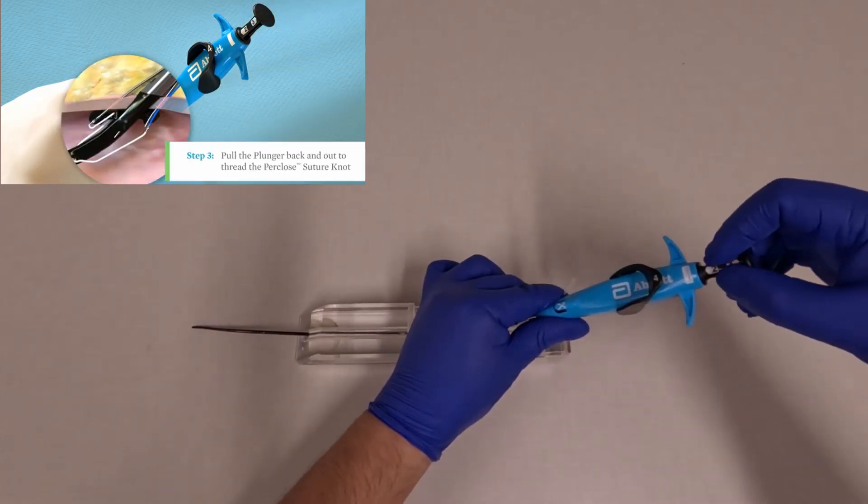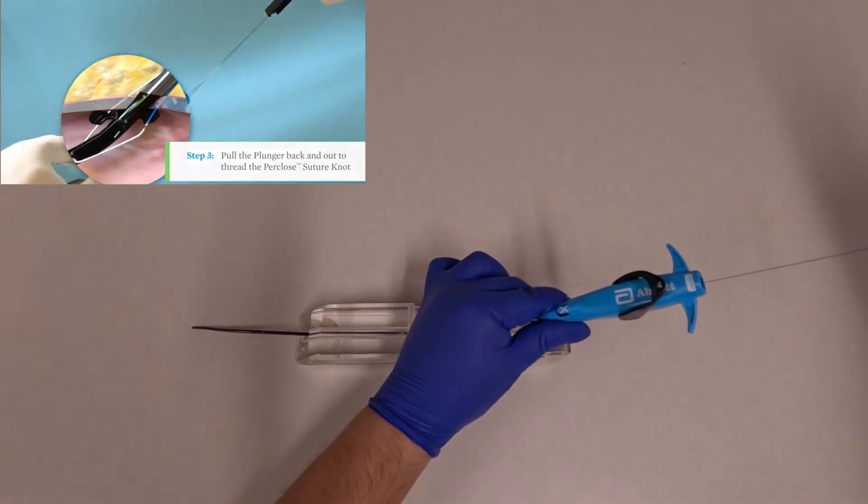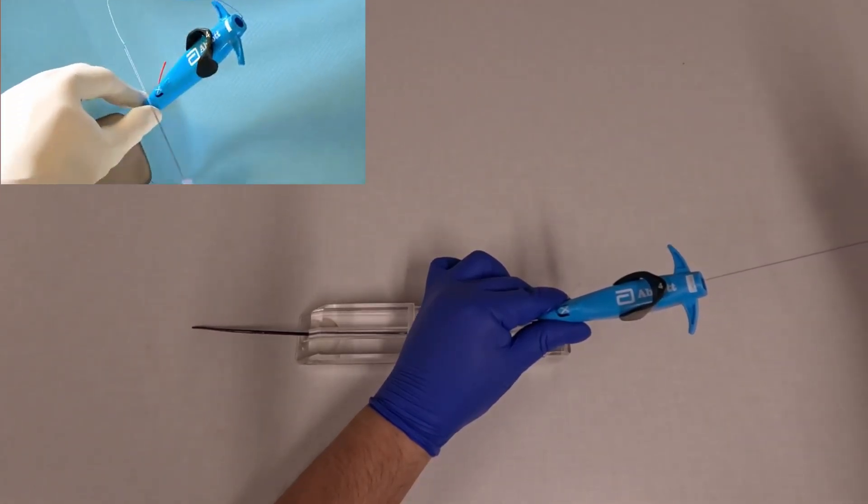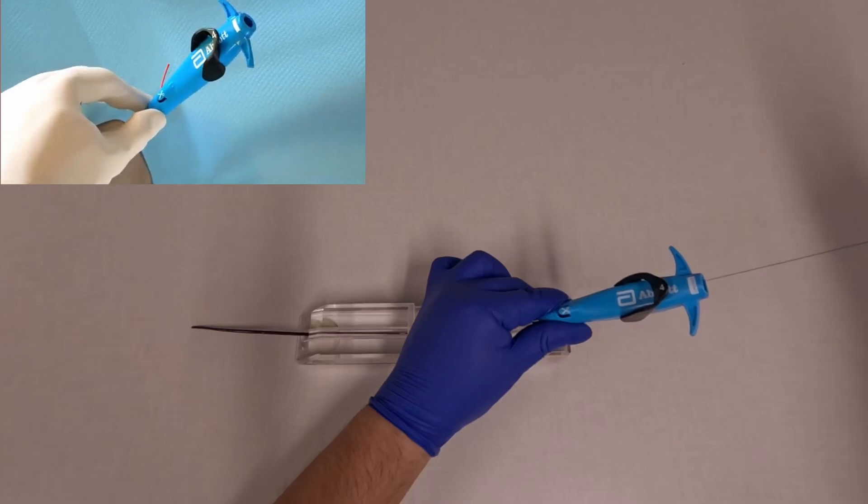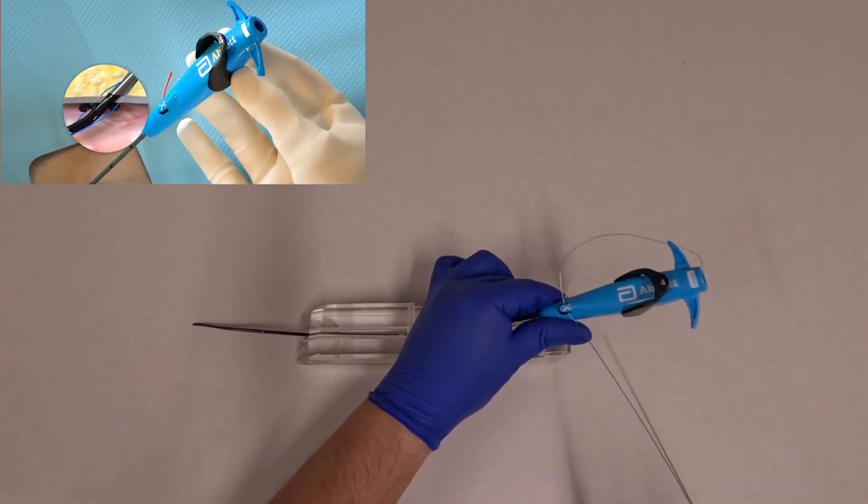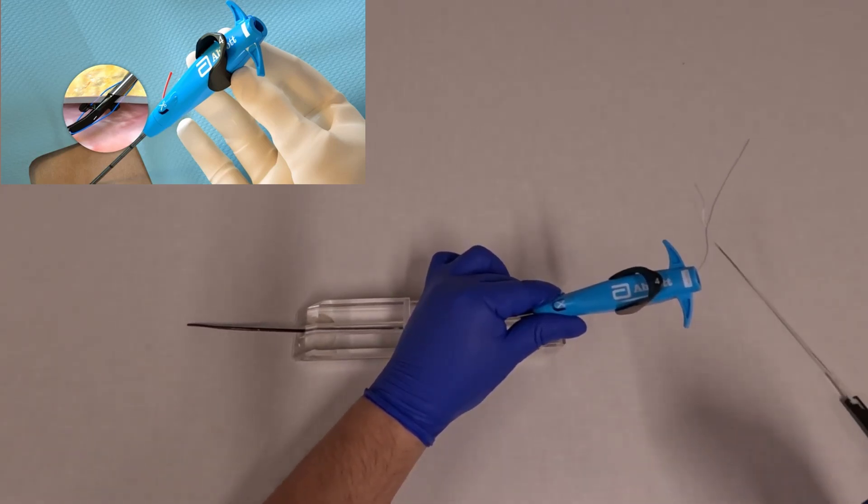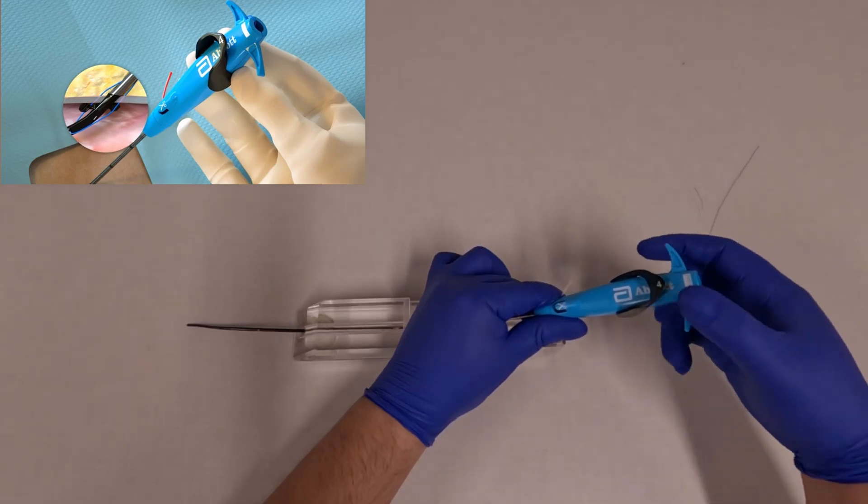Once this is done, then you're going to do step three, which is pulling back on the sutures. They come out completely and they're attached to the suture. Now bring them around to where the suture cutter is on the front of the device. You do it kind of at a perpendicular angle. We call this playing the violin.